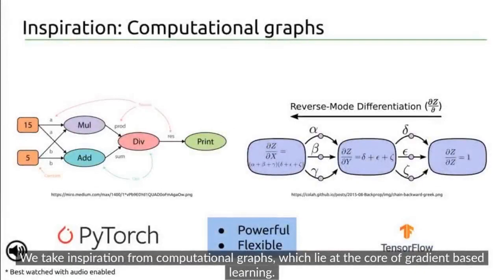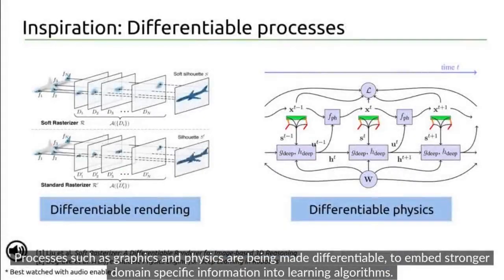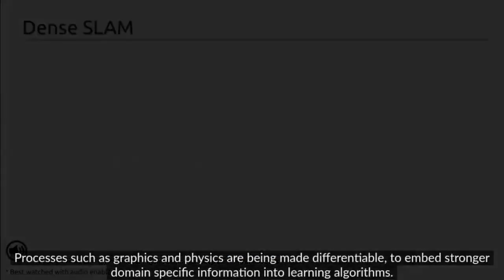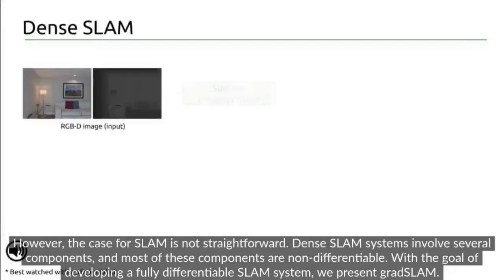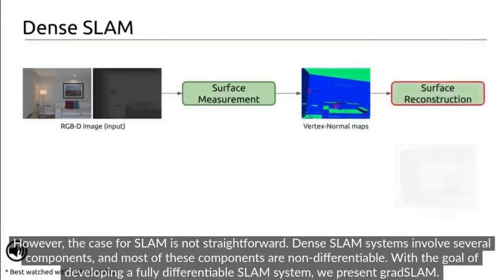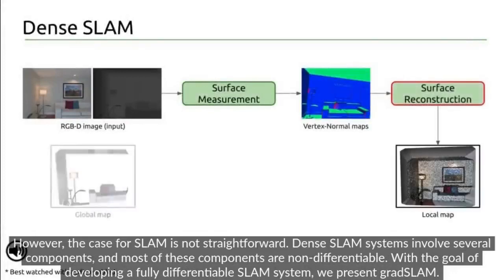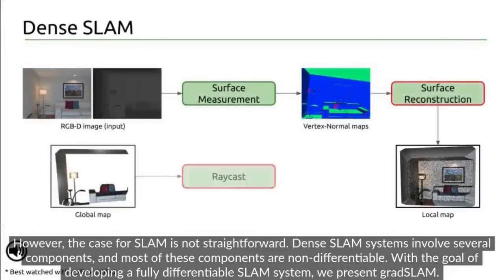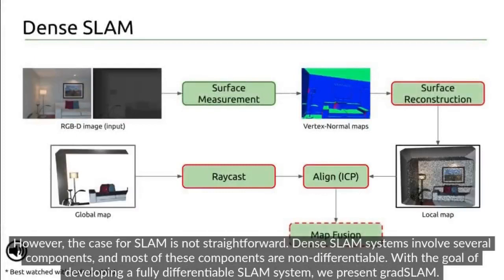We take inspiration from computational graphs which lie at the core of gradient-based learning. Processes such as graphics and physics are being made differentiable to embed stronger domain-specific information into learning algorithms. However, the case for SLAM is not straightforward, as dense SLAM systems involve several components and most of these components are essentially non-differentiable.